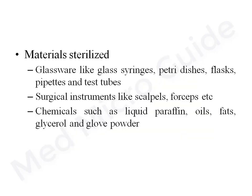Materials sterilized in the hot air oven must not be heat sensitive. Glasswares such as glass syringes, petri dishes, flasks, pipettes, and test tubes are sterilized in the hot air oven. Surgical sharps like scalpels, forceps, and scissors can also be sterilized here. Chemicals such as liquid paraffin, oil, fats, glycerol, and talc powder — which would be damaged in an autoclave — should be sterilized by hot air oven.